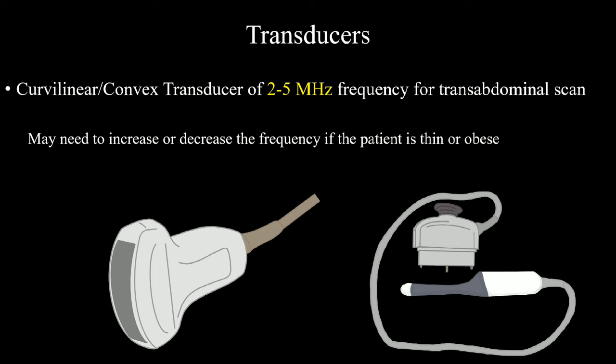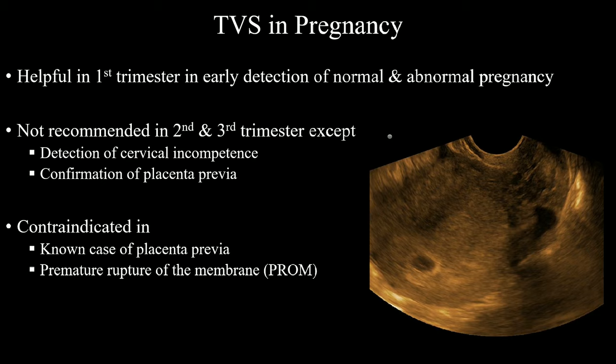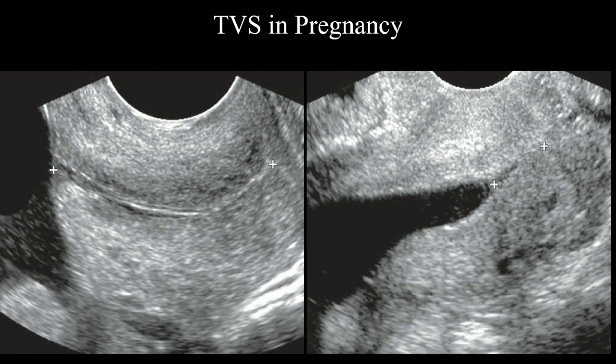TVS is helpful in early detection of normal and abnormal pregnancy. If you do TVS, you will be able to see features at least one week prior to the transabdominal scan. We don't want to do TVS on second or third trimesters as there is a chance of injury or infection, especially in placenta previa and premature membrane rupture. But TVS is indicated on second and third trimesters for detection of cervical incompetence and confirmation of placenta previa. Otherwise, it's better to avoid.